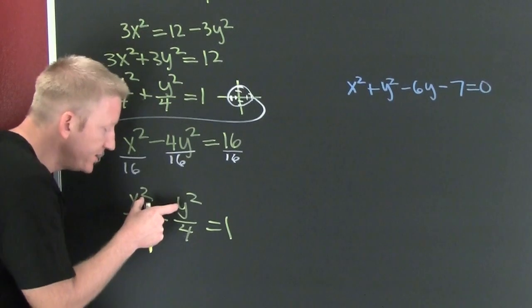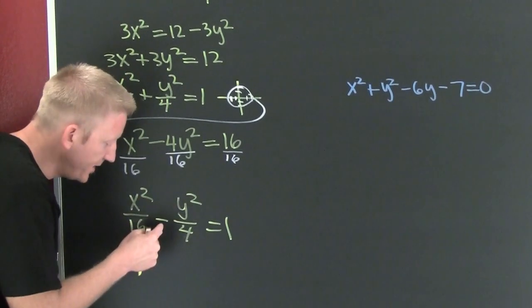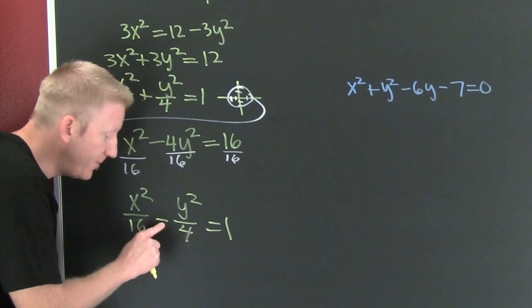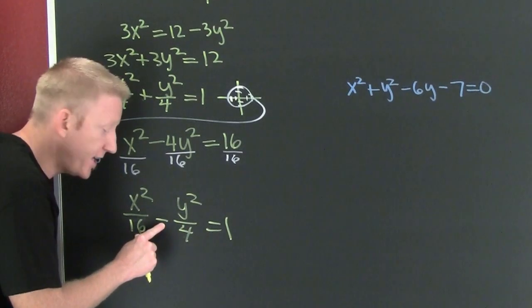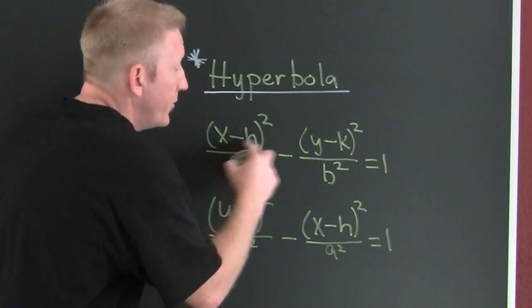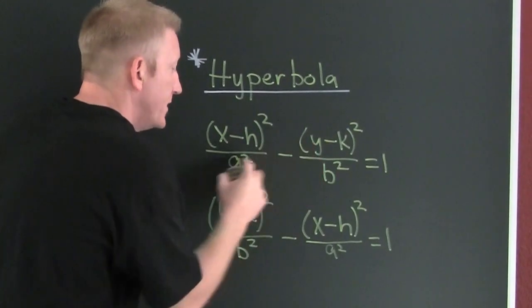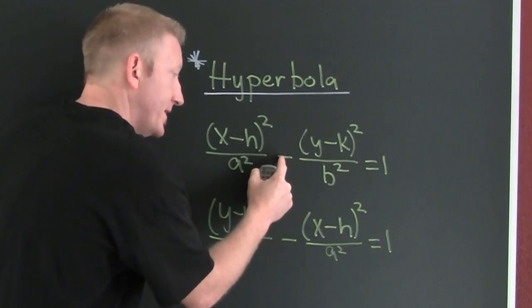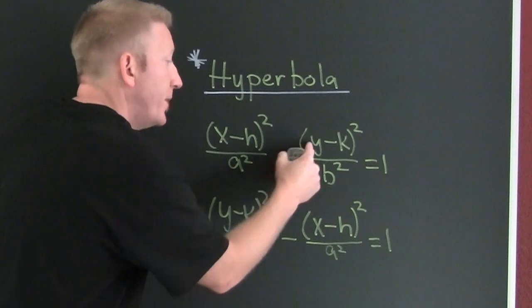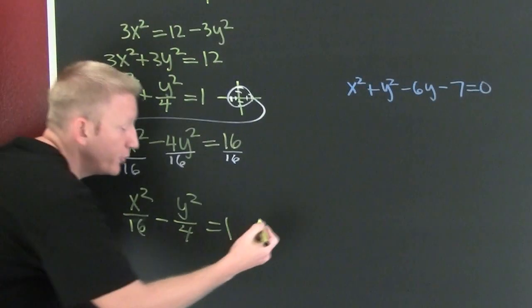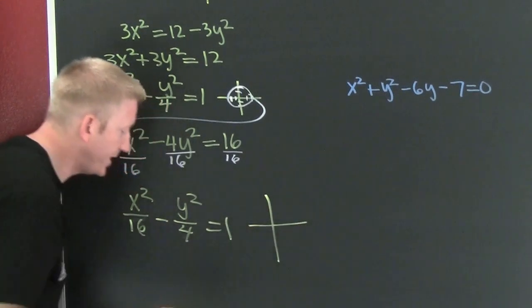Are both variables squared? Yes. Are the denominators different? Yes. Is there a minus sign in between them? Yes. Which one is that? The hyperbola's the one where both variables are squared, the denominators are different, and there's a minus sign between them. It is a hyperbola.